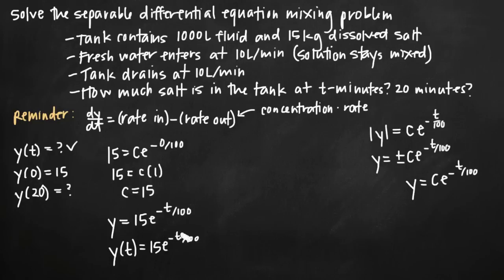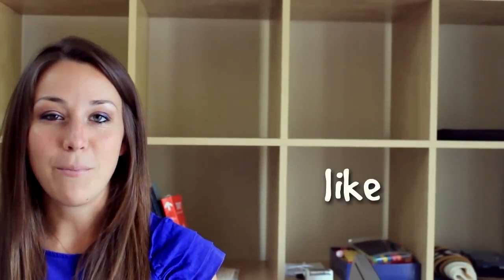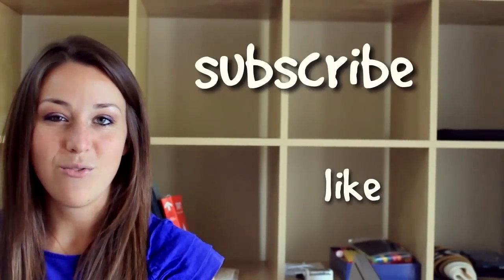To find the salt after 20 minutes, we plug in t = 20: y(20) = 15e^(−20/100) = 15e^(−1/5) ≈ 12.28 kilograms. That's how much salt remains in the tank after 20 minutes. That's how you solve a separable differential equation mixing problem.